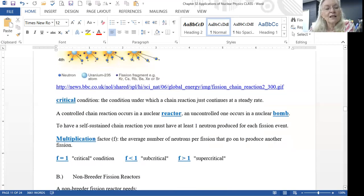So we call some of these conditions. The critical condition is the condition under which your chain reaction just continues at a steady rate. If it's a controlled chain reaction, we have those in nuclear reactors. If it's uncontrolled, you've made a bomb. To have a self-sustained chain reaction, you have to have at least one neutron produced for every fission event. The multiplication factor, which is abbreviated F, gives us the average number of neutrons per fission that go on to produce another fission. If F equals one, we're in the critical condition. If F is less than one, you're in subcritical. And if F is greater than one, it's supercritical and you're going to have a lot of events taking place.